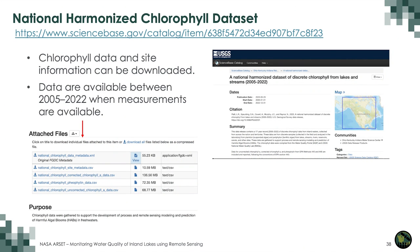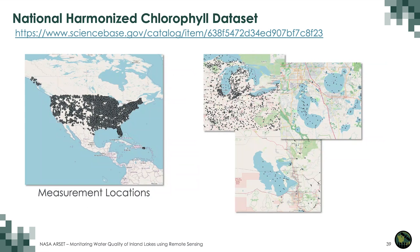There is also a National Harmonized Chlorophyll Dataset, from which chlorophyll data and site information can be downloaded. Data are available between 2005 and 2022 wherever measurements exist. These datasets are for the US only.